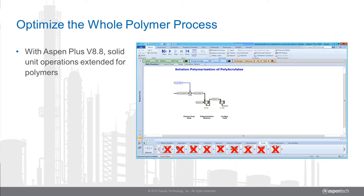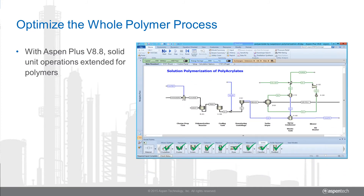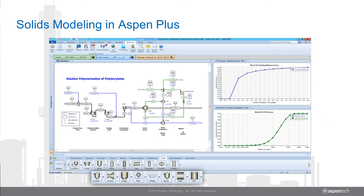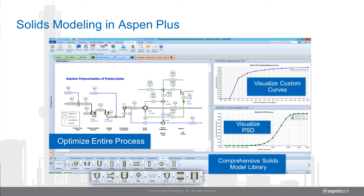The polymer modeling capabilities in Aspen Plus version 8.8 have been expanded to include purification, drying, and conveying, enabling more complete evaluation of both operational and process improvements. The solids modeling capabilities in Aspen Plus allow users to optimize entire processes involving solids and fluids with a comprehensive solids model library, including the ability to visualize particle size distributions and curves such as residual moisture, separation efficiencies, and economics for solids.